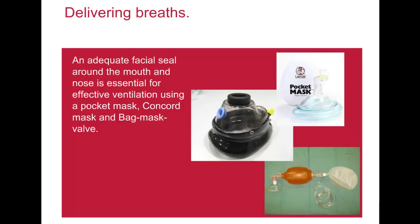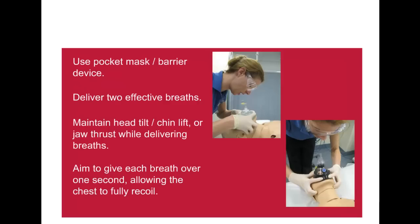An adequate facial seal around the mouth and nose is essential for effective ventilation using a pocket mask, Concord mask, or bag mask valve to deliver breaths. If you are using a mask during resuscitation, position yourself at the victim's head if able. Use both hands to hold the mask in place and open the airway using the head tilt or jaw thrust manoeuvre. Deliver the breath with enough volume and force to observe chest rise, then remove your mouth from the mask to allow exhalation. If the chest does not rise, recheck the head tilt, chin lift or jaw thrust position and the mask seal.